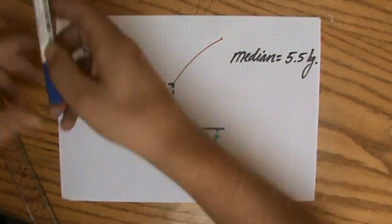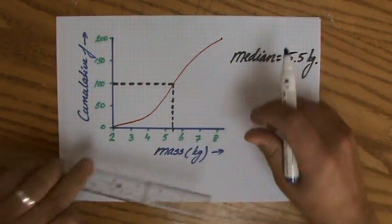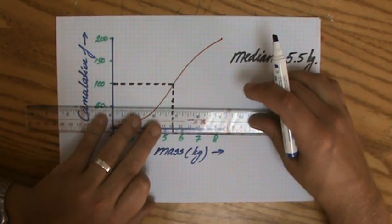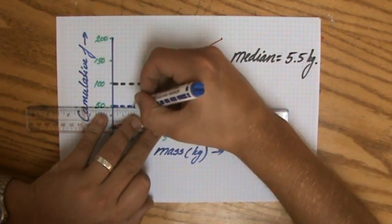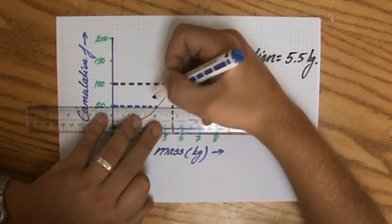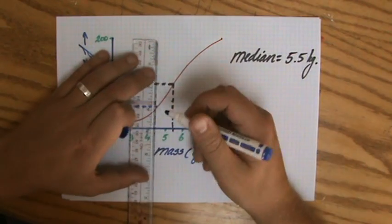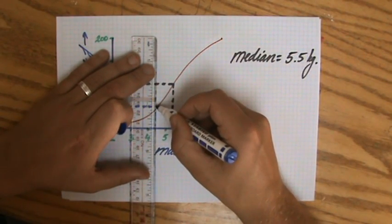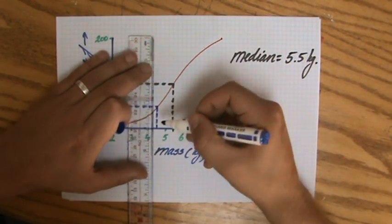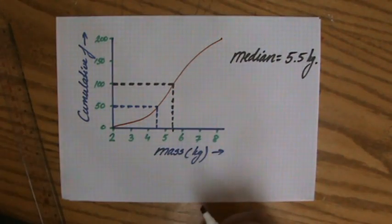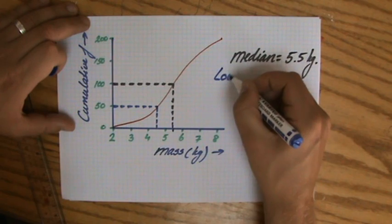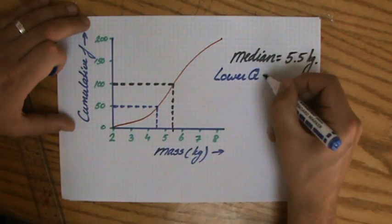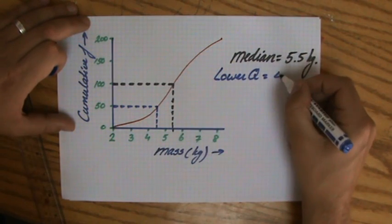The lower quartile - quartile, quarter. What is a quarter of 200? That is 50. Let me take a different color, let me try some blue. So a quarter, this is the lower quartile. And if I go to my graph there, and then I go down, there we go. Then for me with my thick marker, the lower quartile is 4.5.